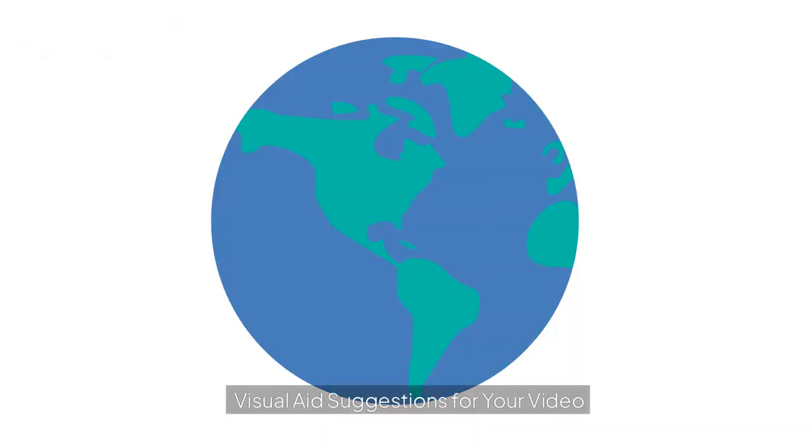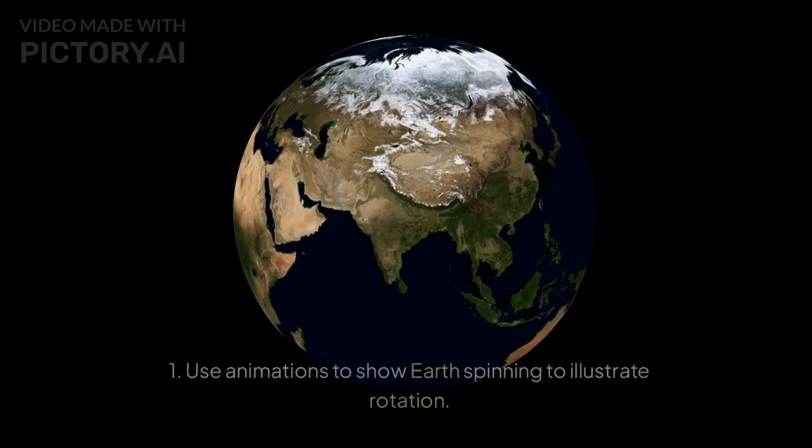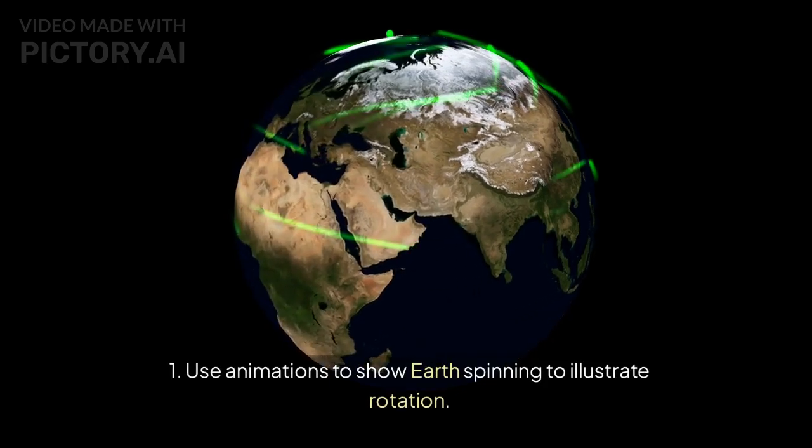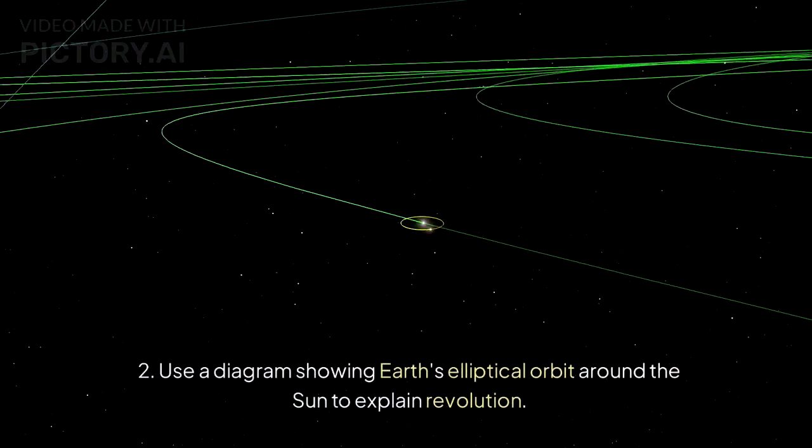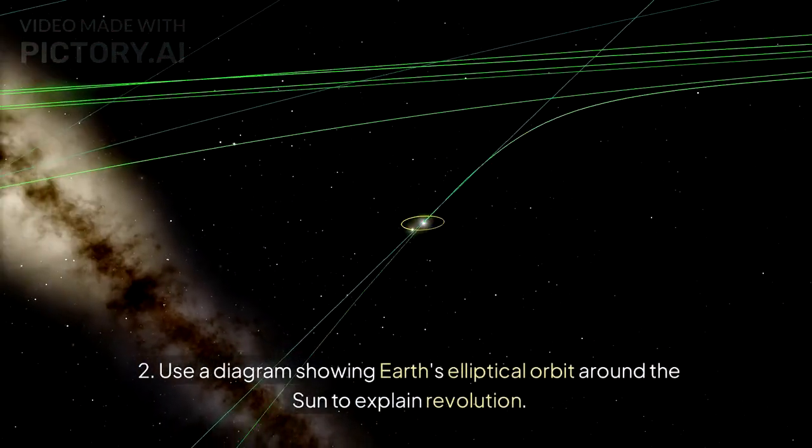Visual aid suggestions for your video: Use animations to show Earth spinning to illustrate rotation. Use a diagram showing Earth's elliptical orbit around the sun to explain revolution.